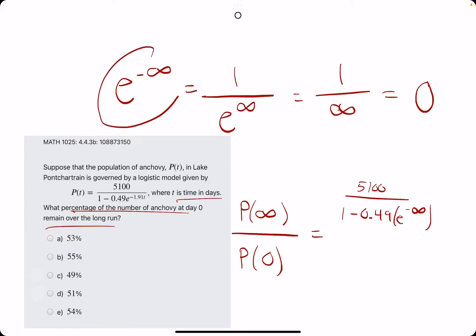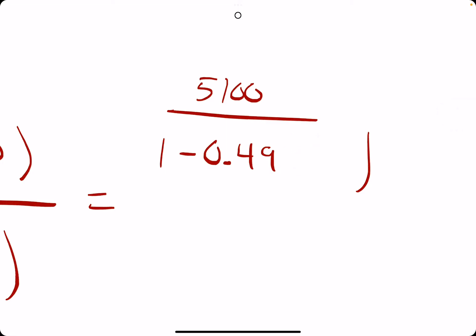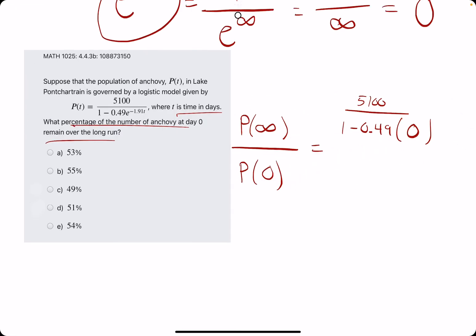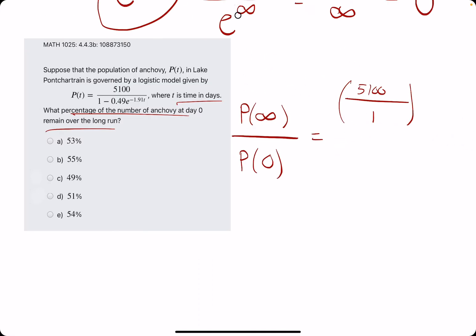So, what is this saying? It says that e to the negative infinity equals 0. So, we'll really just replace this e to the negative infinity with 0. But if we have 0.49 times 0, then really all of this goes to 0. And all we have left is 5,100 divided by 1 for the evaluation as p goes to infinity.